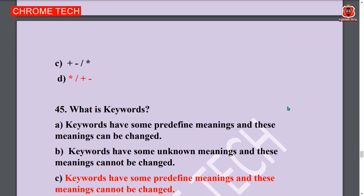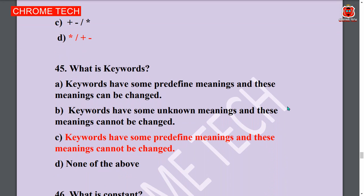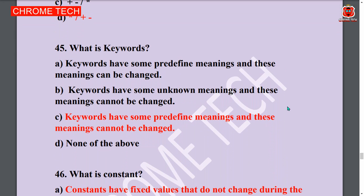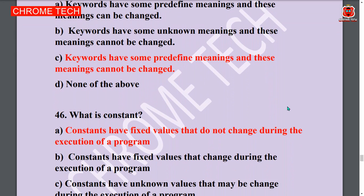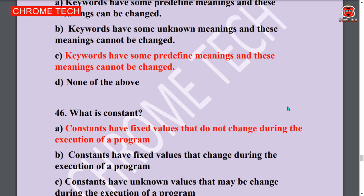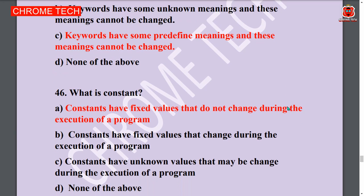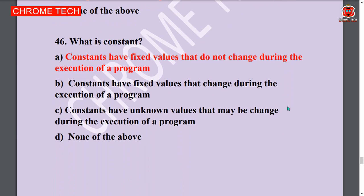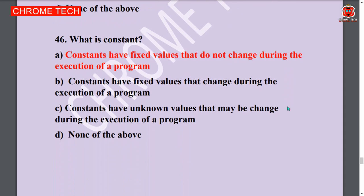Next question: What is a keyword? Keywords have some predefined meaning and these meanings cannot be changed. Option C is the answer. Next question: What is a constant? Constants have a fixed value that does not change during the execution of a program. Option A is the answer.